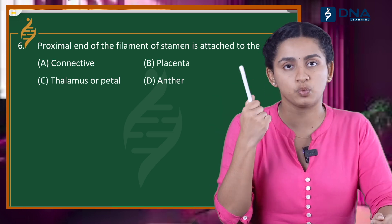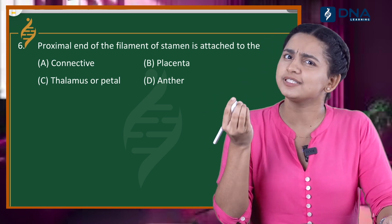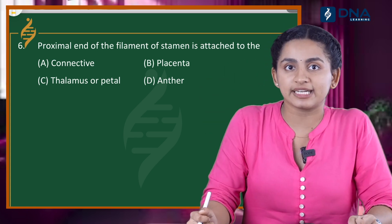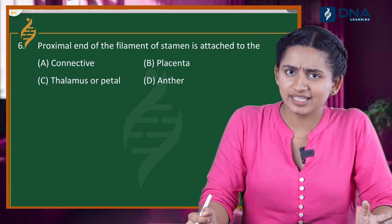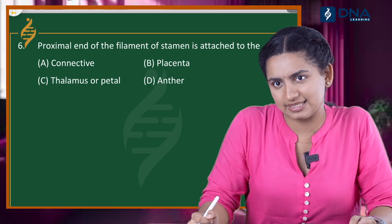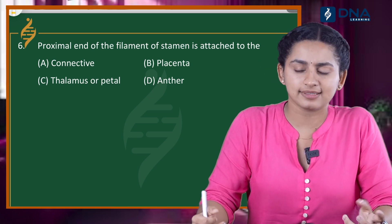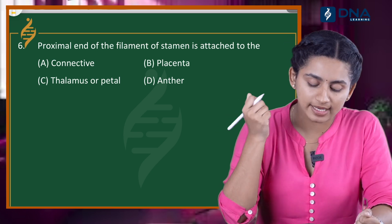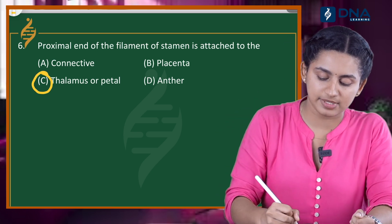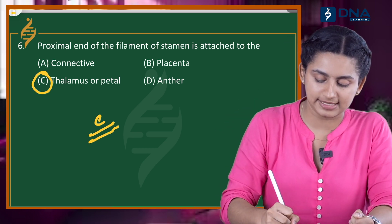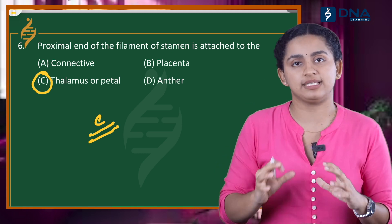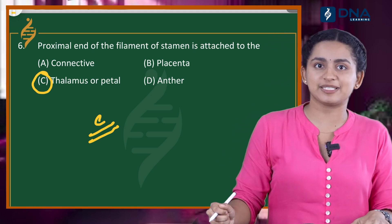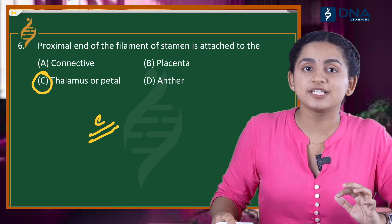The proximal end of the filament is attached to the thalamus or petal. The connective is the tissue connecting the two anther lobes. Placenta is part of the female reproductive organ. The correct option here is Option C — thalamus or petal, which is the bulged portion of the receptacle where the flower parts are attached.